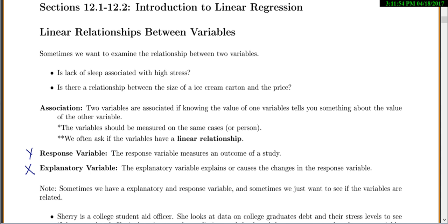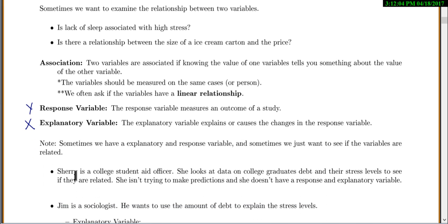Now, sometimes we have an explanatory response variable in mind, and we know which one we want to be able to predict. And sometimes we just want to see if there's a relationship. So, like, for Sherry, she's a college student. She looks at data on college graduates' debt and their stress levels to see if they're related. She's not trying to make predictions, so she doesn't really have a response and explanatory variable, so either one could be the x or y.